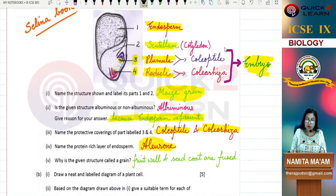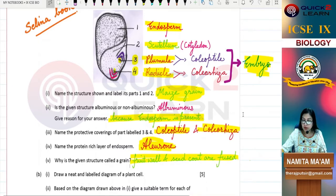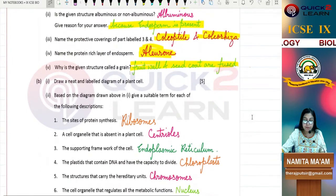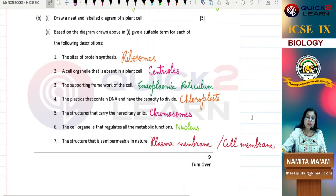Why is the given structure called a grain? Because the fruit wall and seed coat are not clearly distinguished. They are fused together, not separate. Next is: Draw a neat and labeled diagram of a plant cell.